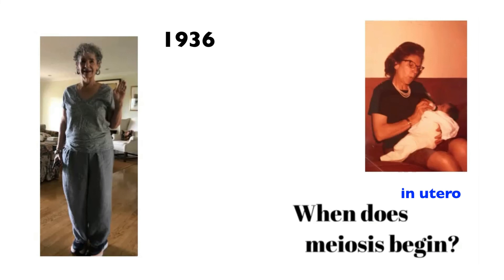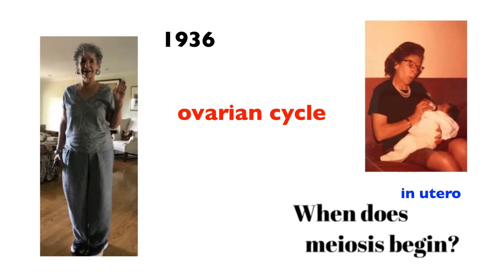When females reach reproductive maturity — somewhere between 12 and 15 years old — meiosis resumes for one of those developing ova once a month for the entirety of the female's reproductive years. For example, from age 15 to 50 is 35 years. Every month, one of those eggs theoretically completes meiosis. That's what's known as the ovarian cycle — a roughly 28-day cycle that allows one of those developing eggs to finish meiosis.